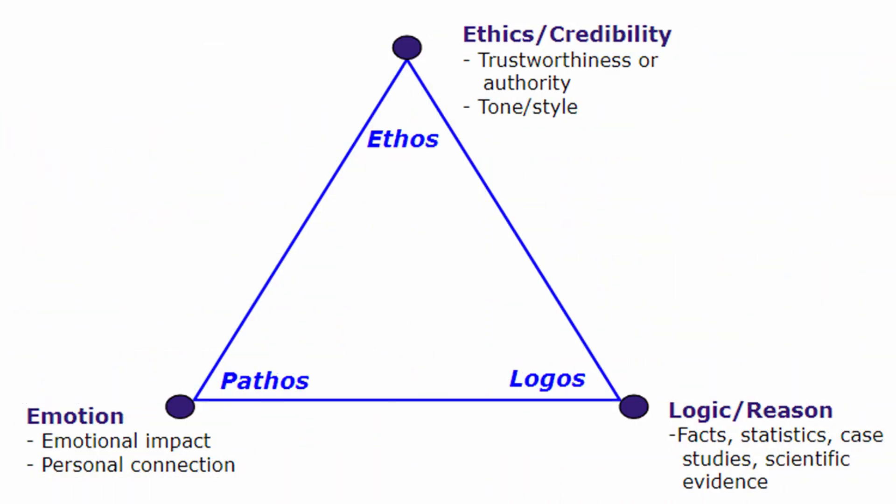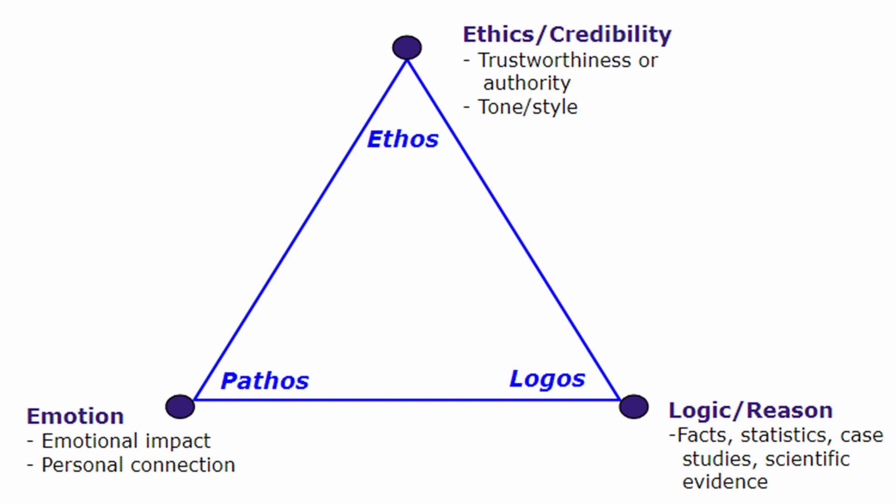Aristotle's model for persuasion included three modes — ethos, logos, and pathos — and they're known today as the rhetorical triangle.